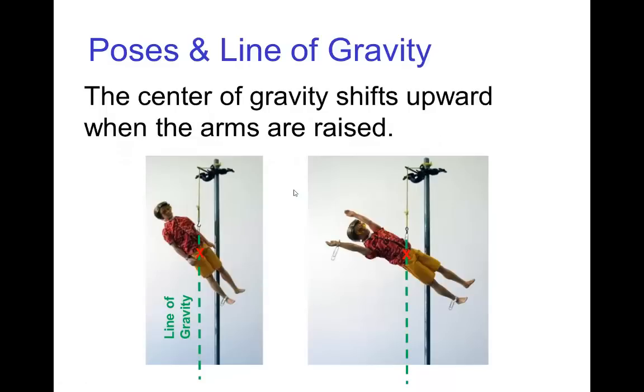As was mentioned before, the center of gravity will shift according to a character's pose. And so here we see the doll, when the doll raises its arms, then the location of the center of gravity shifts higher in the torso. And we see that indicating here from this hanging pose that the position of the line of gravity shifts with it.